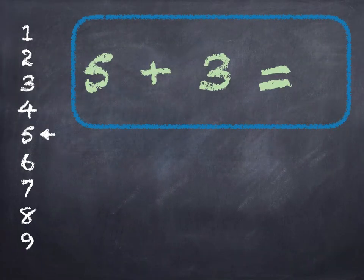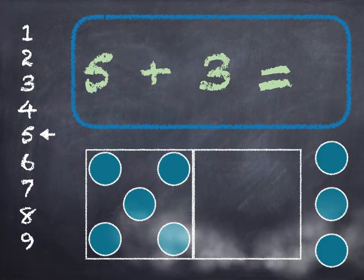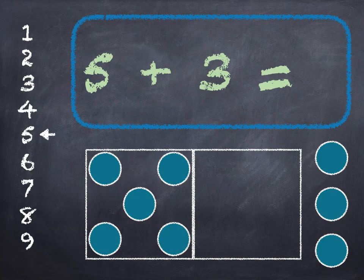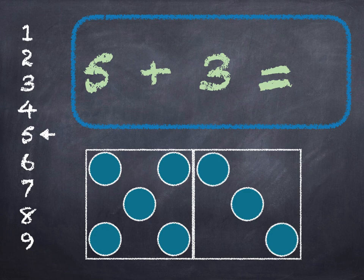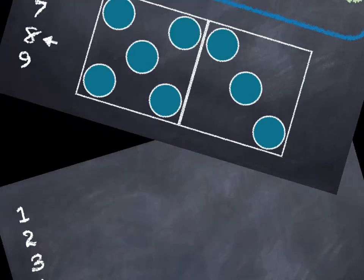5 plus 3. 5 in the box and add 3 on. 5, 6, 7, 8. Start at 5 on the number line, go down 3. 1, 2, 3. 5 plus 3 is 8.